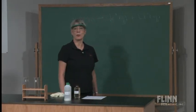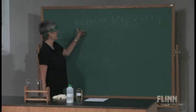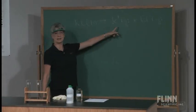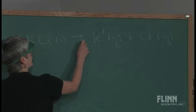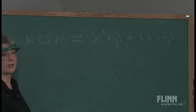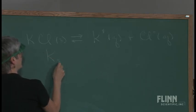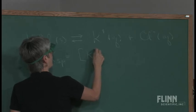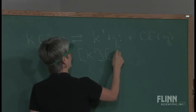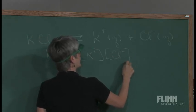I point out to the students that when the potassium chloride dissolves, I get potassium ions and chloride ions. But if I have a saturated solution then I have an equilibrium, and we know for salts we can write a Ksp, which would be the product of the potassium ion concentration times the chloride ion concentration.